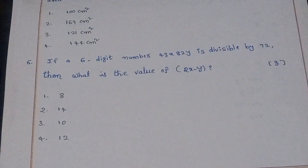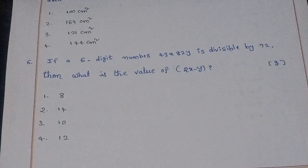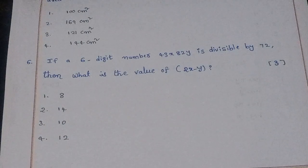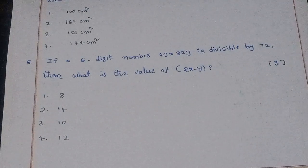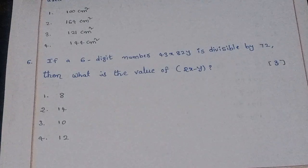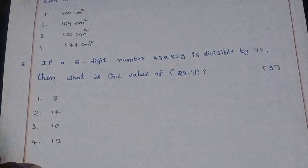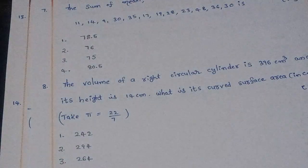Sixth question: A six-digit number 43x82y is divisible by 72. What is the value of 2x minus y? The right answer is option 3: 10.